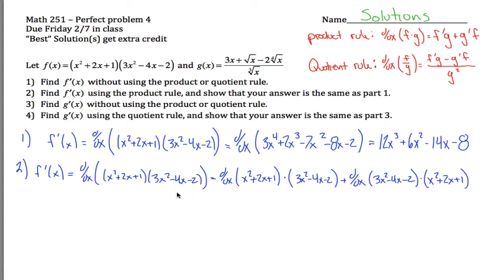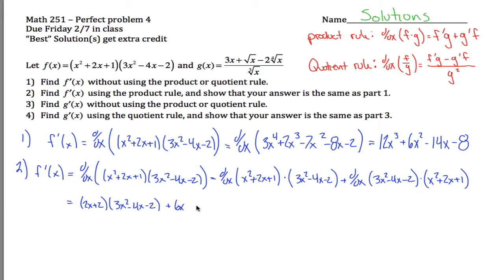What I've done is changed one derivative into two derivatives, which sounds bad but is actually good because these are easier to take. The derivative of x squared plus 2x plus 1 is just 2x plus 2. Then I copy 3x squared minus 4x minus 2 — I took the derivative of the first, but leave the second alone; this is g, not g prime. Then add the derivative of g, which is 6x minus 4, multiplied by f, which is x squared plus 2x plus 1.